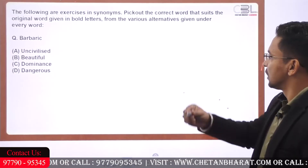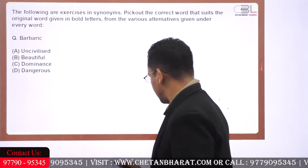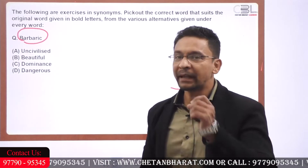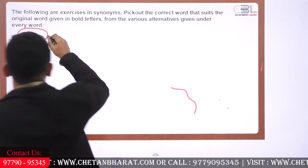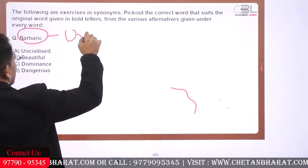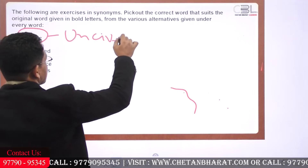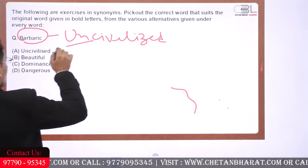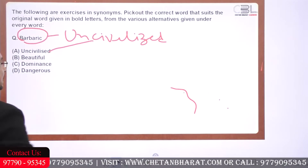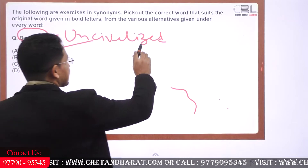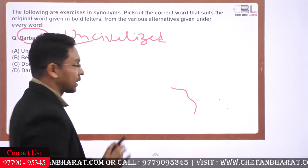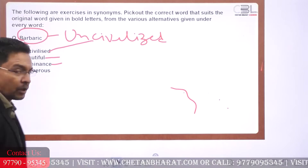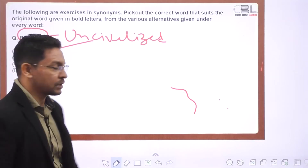So the next one. Now we need to find the synonym to this word. What does 'barbaric' mean? It means uncultured or uncivilized. The S means the British spelling; the Z means the American spelling. So both are correct. We know the meaning of dominance means to dominate somebody or the domination of someone.